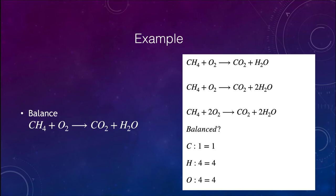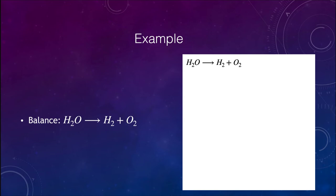Now we're going to look at several more examples so you can get some practice. Let's balance water decomposing into hydrogen H2 and oxygen O2. So H2O decomposes and yields hydrogen and oxygen molecules. We start off by looking at what we have on each side. We have two hydrogens on the left-hand side and two on the right, so hydrogen right now is balanced. Oxygen, however, is not.